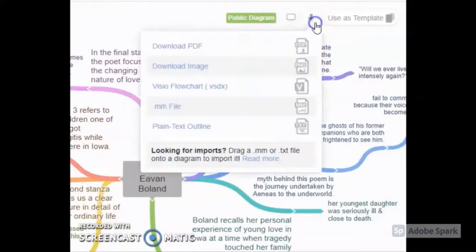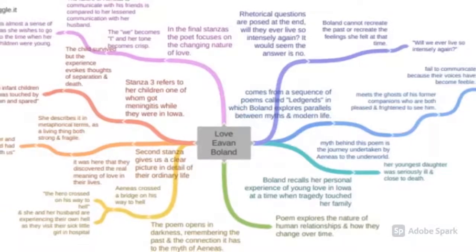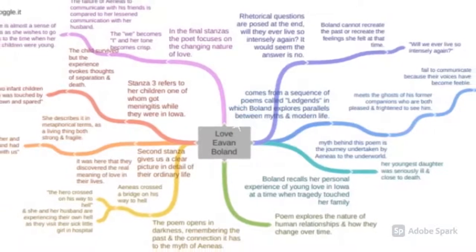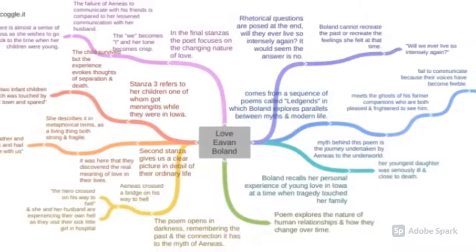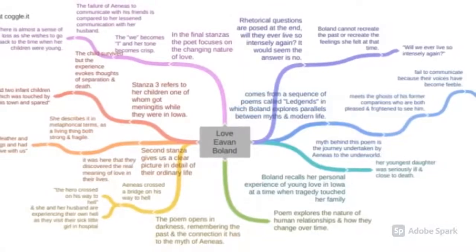Coggle allows students to export their mind maps into PDF and image files so they can print their work, display it or include it in a presentation or video.